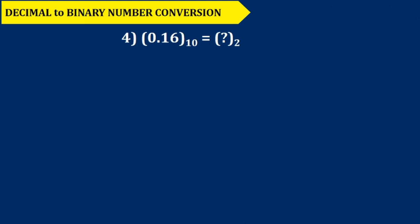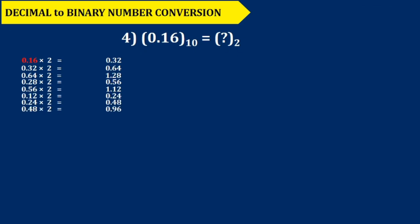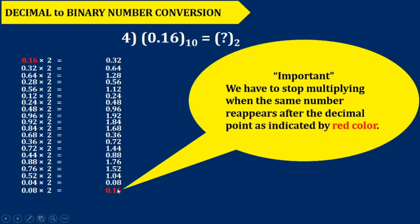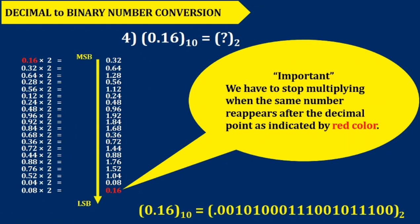Let's take a typical problem. Here we are going to convert 0.16. When 0.16 is multiplied by 2 it gives 0.32. Further multiplication gives us a series of numbers. How do we decide at what point to stop? This is important — pay attention. As soon as we get the same fraction number repeated, we have to stop at that point and collect the integers. This is the corresponding binary number of 0.16.